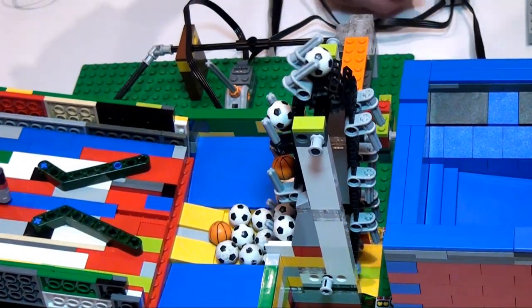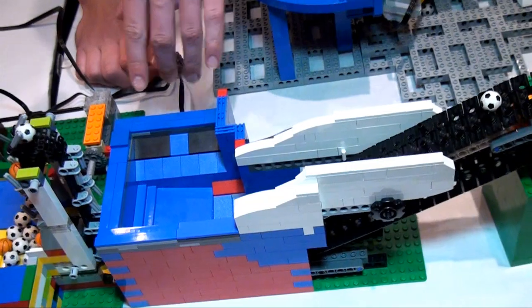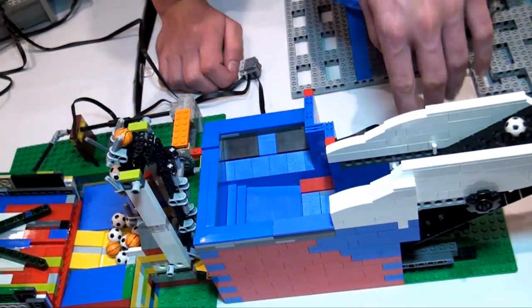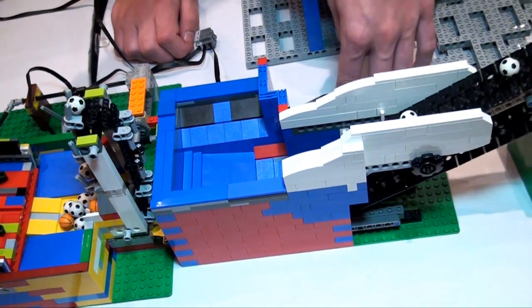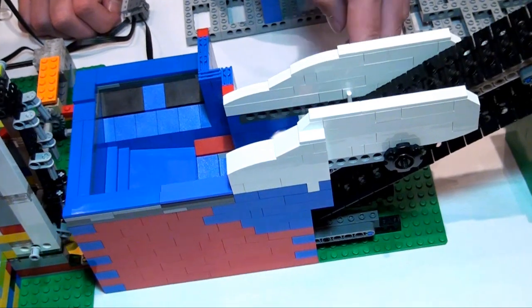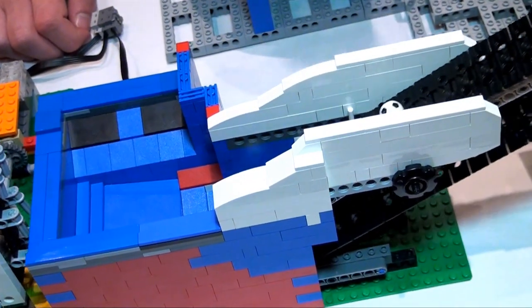And then the next module, we have the balls come down in, and then we have two sets of reducing the power of the motor, which leads up into the next one.